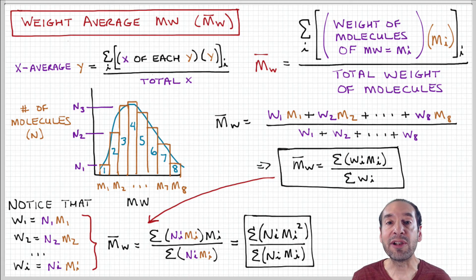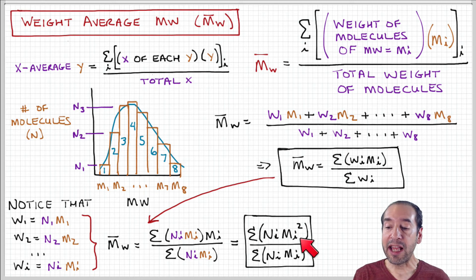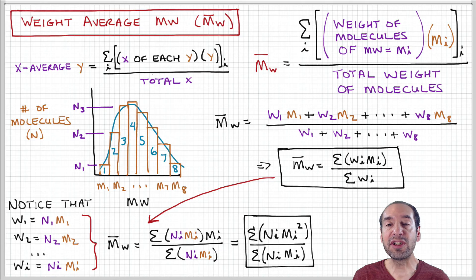That's the weight average molecular weight. This kind of average is a little different — notice that it weights the heavier fractions in the distribution more strongly, so it skews the average in a different way.